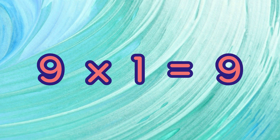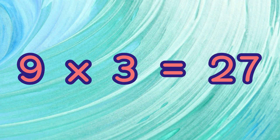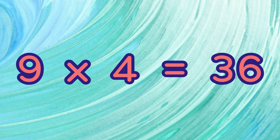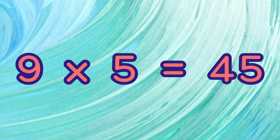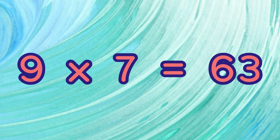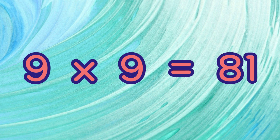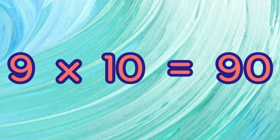9 times 1 equals 9. 9 times 2 equals 18. 9 times 3 equals 27. 9 times 4 equals 36. 9 times 5 equals 45. 9 times 6 equals 54. 9 times 7 equals 63. 9 times 8 equals 72. 9 times 9 equals 81. 9 times 10 equals 90.